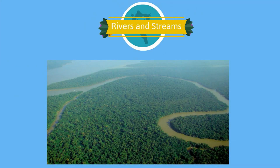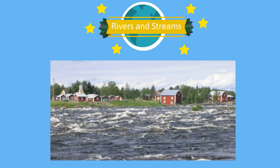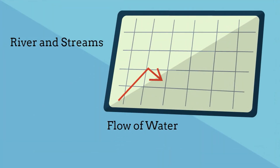Rivers and Streams. The water in rivers and streams flows in one direction, beginning at the source called a headwater and traveling to the mouth where the flowing water empties into a larger body. The slope of the landscape determines the direction and speed of the water flow. When the slope is steep, water flows quickly; when it is not as steep, the water slows down.